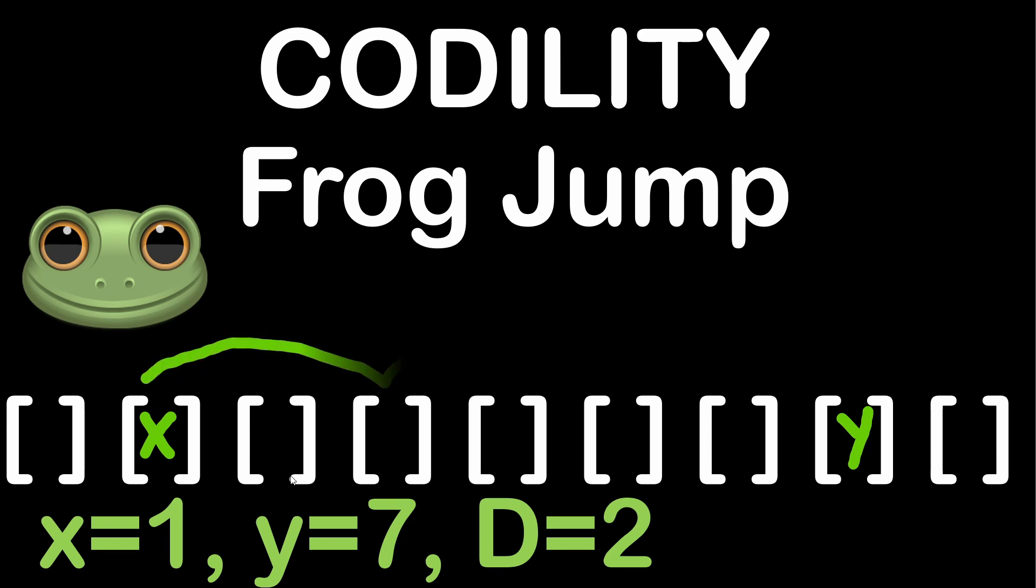this means the frog will have to jump 3 times to reach position y. So in this exercise you are provided a function taking 3 parameters: starting and target positions, and the jump distance d,